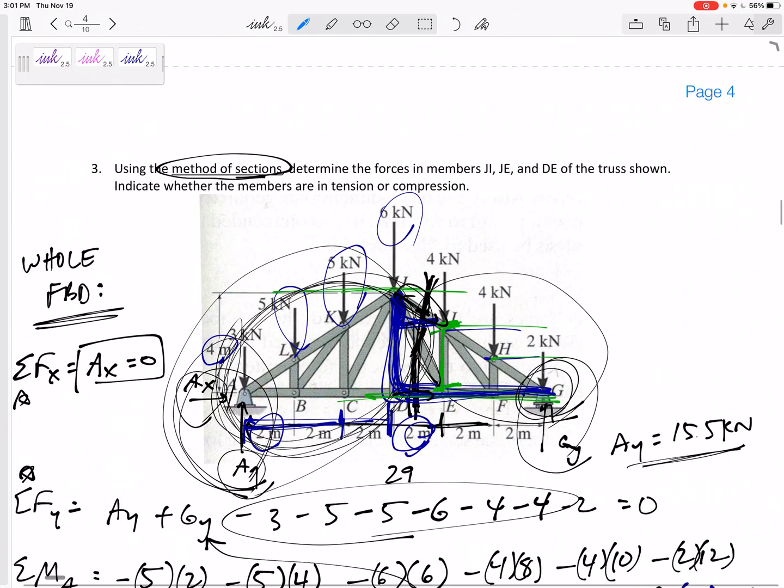Method of joints, what do we do? We look at a joint, so maybe I would start here with joint G, and I would say, okay, I've got 13.5 right there. I've got two right here, and then I don't know the force in GH, and I don't know the force in FG, but I have two equations for every single joint because that joint is in equilibrium. All right, that's method of joints.